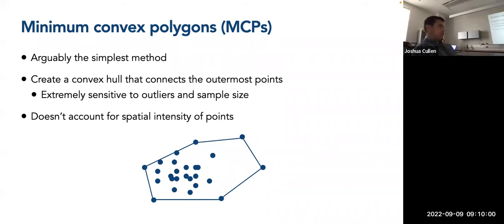So one way to do so that was kind of developed originally, I think 1947 was when this was first used for animal space use, is minimum convex polygons. Essentially it's creating this convex hull around the outermost points of what could be a track or, again, a set of points from a survey. And it's arguably the simplest method of all those that are available. So because it creates a convex hull around these outermost points, it's extremely sensitive to outliers and your sample size. So you'll see here on this bottom image or figure that I've created that we have this increased density of points that's closer to the middle.